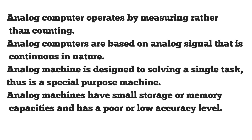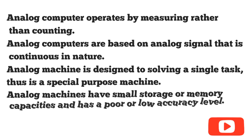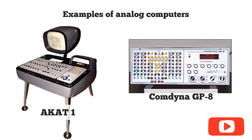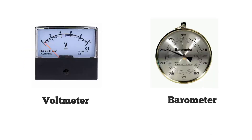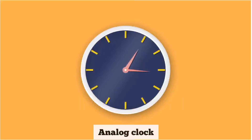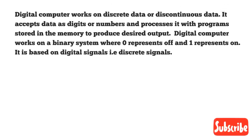An analog machine is designed to solve a single task and is thus a special purpose machine. Analog machines have small storage or memory capacities and have a low accuracy level. Presley is an example of an analog computer. Other examples of analog devices are thermometer, speedometer, voltmeter, barometer, and analog clock.